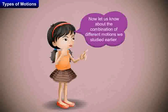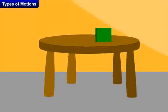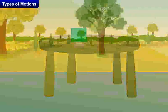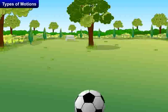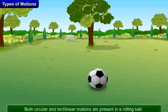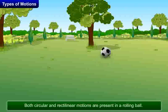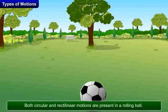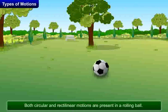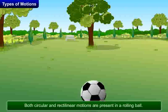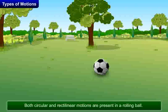Now, let us know about the combination of different motions we studied earlier. Few objects while moving show or perform more than one type of motions. For example, rolling of a ball on the ground shows two types of motions — both circular and rectilinear motions. If we throw a ball on the ground, we can observe that the ball is rolling in a straight line. Rolling is circular motion, and along with rolling, the ball moves forward in a straight line which is rectilinear motion. Hence, we can conclude that a ball moving on the ground shows both rectilinear and circular motions.